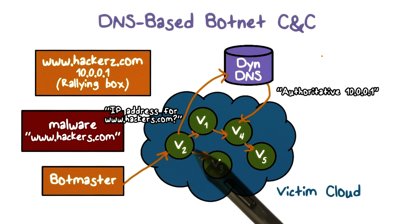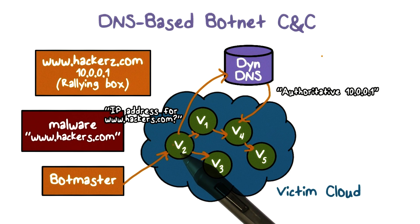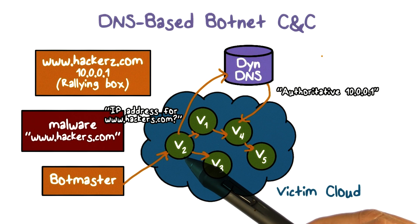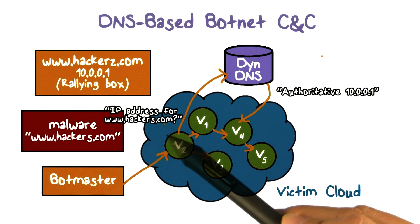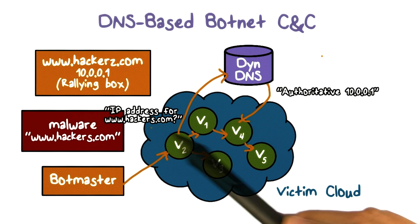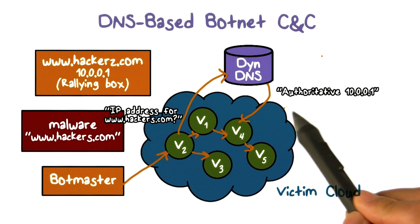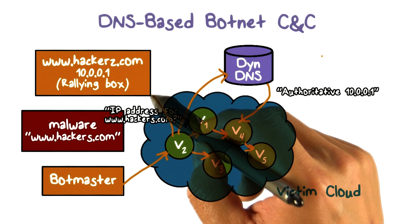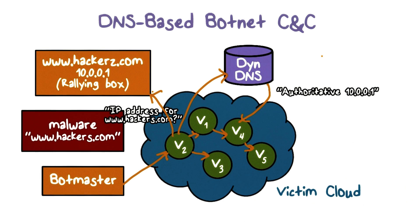To perform C&C, each bot is instructed to communicate to the C&C server. The C&C server is identified by the domain name. So the first thing the bot will do is ask the DNS server: what's the IP address for hacker.com? The DNS server will tell the bot the IP address, and then the bots would actually communicate to the C&C server. That's how botnet C&C works through DNS.